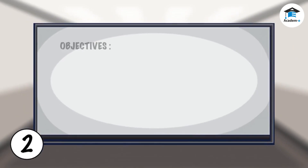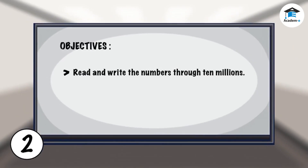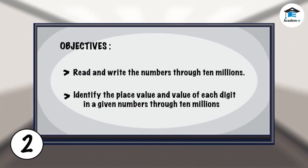Objective. At the end of the lesson, you should be able to read and write numbers through ten millions. Identify the place value and value of each digit in numbers up to tens of millions.